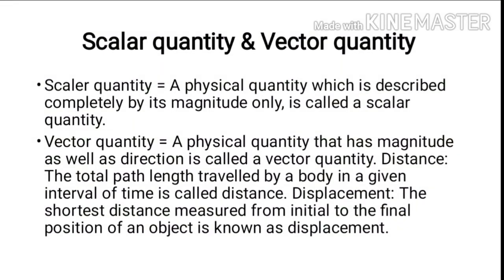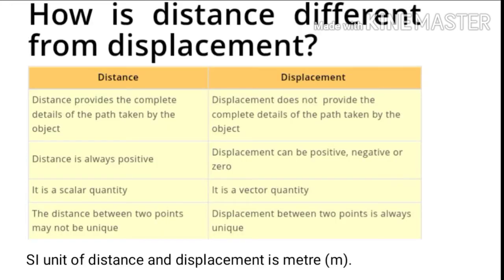What is the difference between distance and displacement? Distance provides the complete detail of the path taken by an object. Distance is always positive. It is a scalar quantity. The distance between two points may not be unique. Whereas displacement does not provide the complete details of the path taken by an object. Displacement can be positive, negative, or zero. It is a vector quantity. Displacement between two points is always unique. The SI unit of distance and displacement is meter.